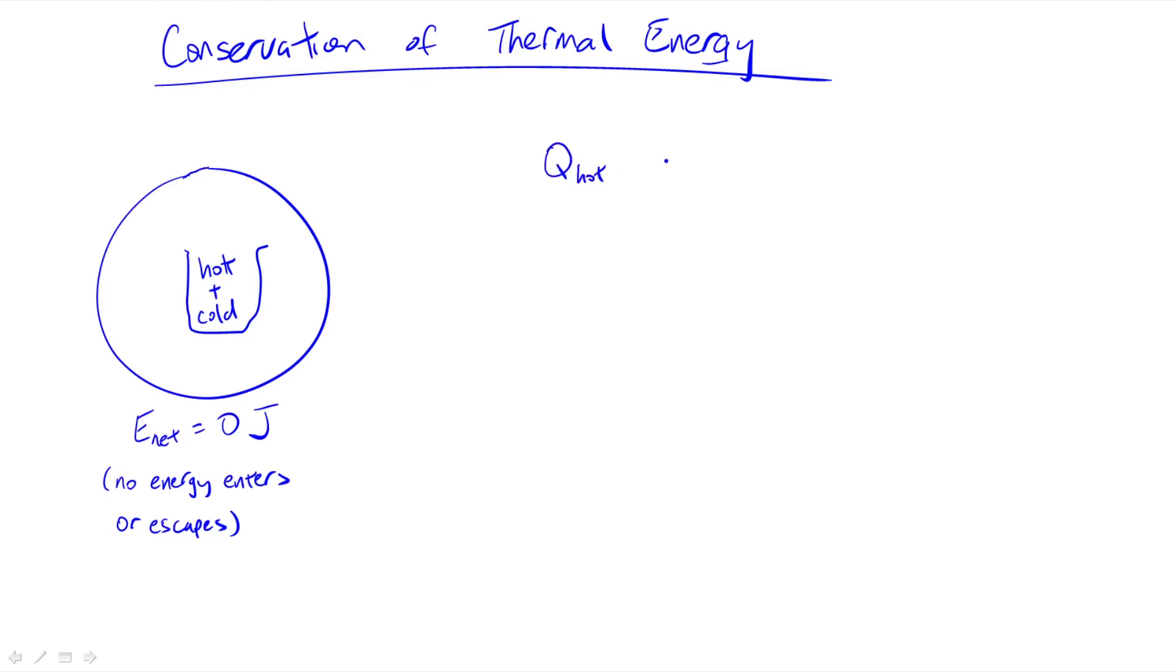So Q hot plus Q cold equals zero joules. If we expand this formula out, it would look something like this. In fact, some science textbooks will rearrange the formula and make it look more like this. However, the origins of this new equation come from the first statement.